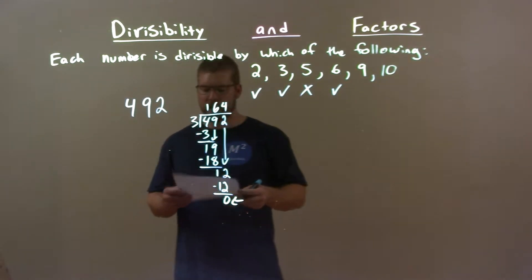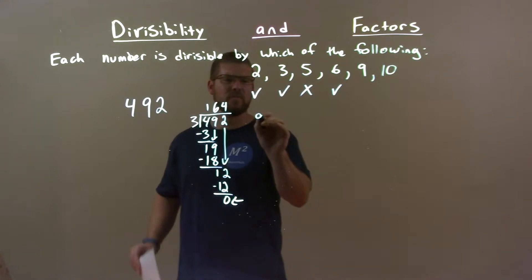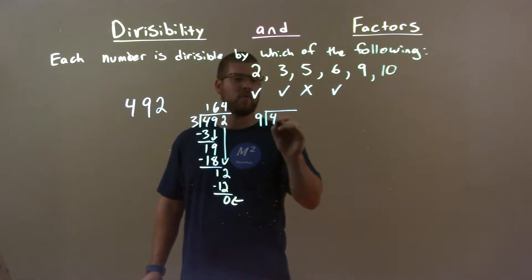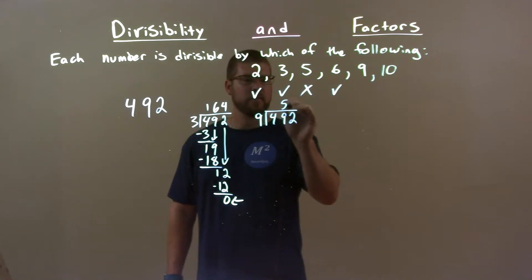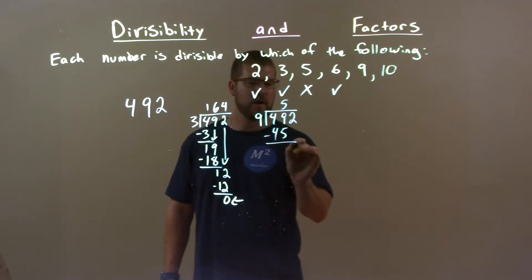Now, we got to check 9. Does 9 go into it? So, 9 goes into 492. Well, 9 times 5 is 45. Subtract it. We have 4 left over. Bring down the 2.